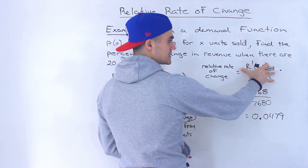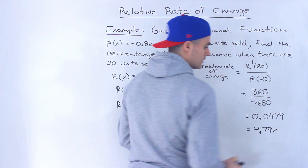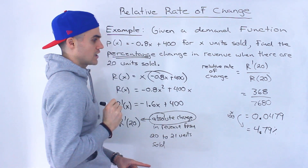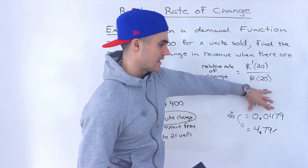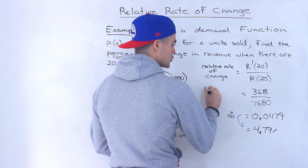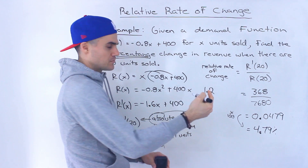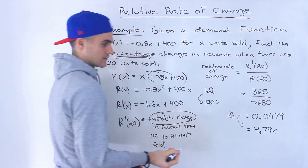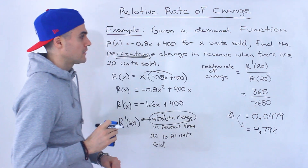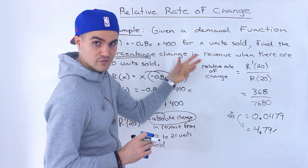To get the percentage rate of change, multiply by 100, giving 4.79%. Don't forget that step of multiplying by 100 if they're asking for the percentage change. Sometimes it's obvious it's a decimal, but sometimes it won't be. For example, if you get 1.2, you might think that's 1.2%, but you have to multiply by 100 and you'd actually get 120%. So just don't forget to multiply by 100 when they're asking for the percent relative rate of change.